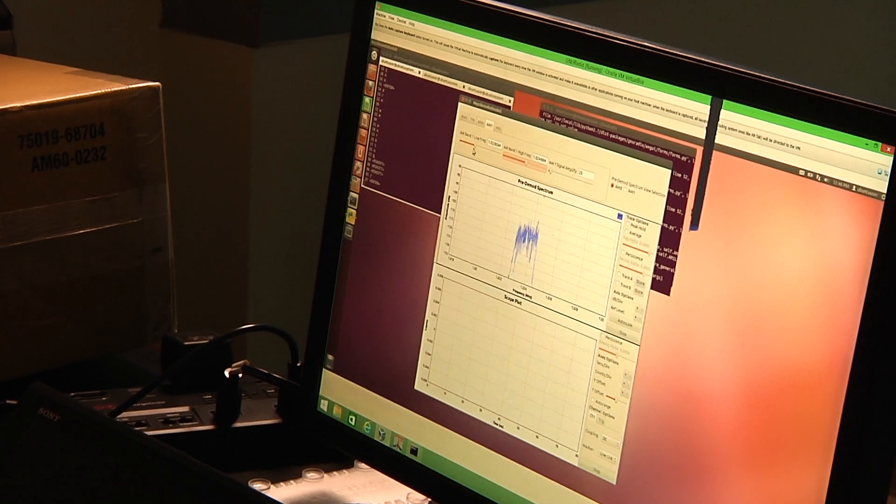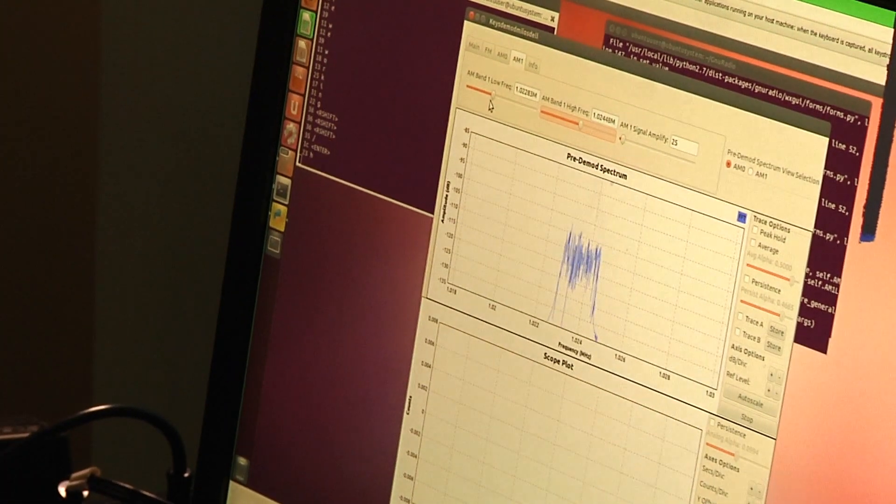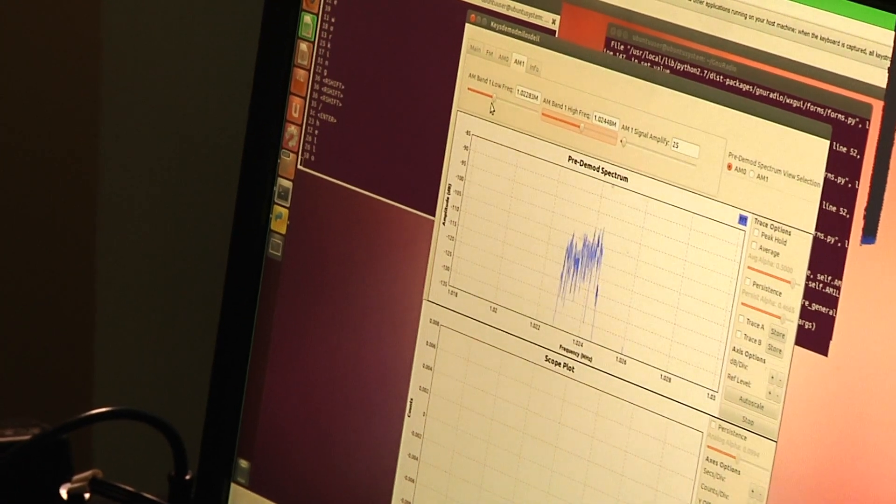They're called side channels because they're not meant to be there. Essentially, any electronic activity that generates current fluctuation is creating a signal that is related to activity in the machine.